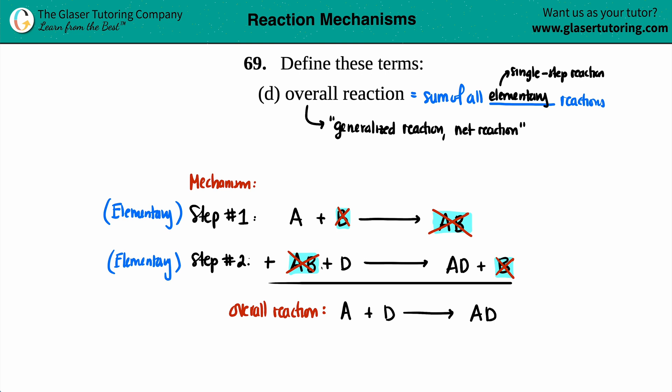And that's the definition. An overall reaction is a generalized reaction that is the sum of all of the elementary reactions in the mechanism. So maybe I'll just put that in there, sum of all elementary reactions in a mechanism.